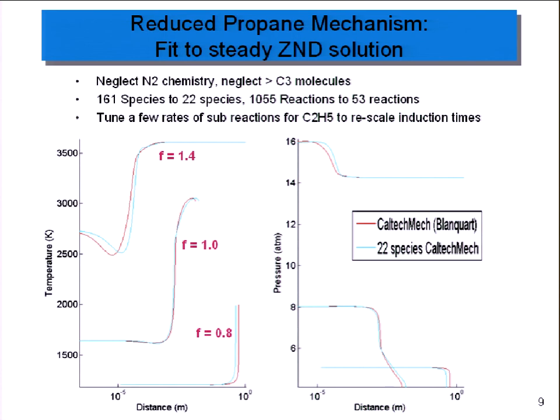I'm interested in irregular detonations. We don't know that much about them, so we have to start making models. If you want to know about chemistry in irregular detonations, propane in particular, which is one of the most unstable ones, you start with a mechanism. The mechanism the chemist gave you has 1,055 reactions in 161 species.